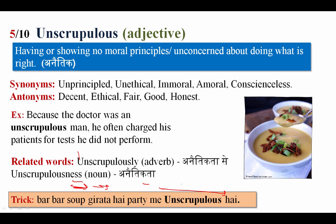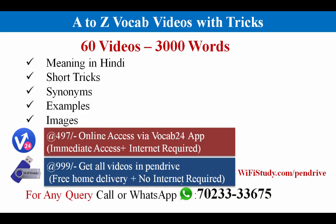Related word forms: unscrupulously — meaning unethically; unscrupulousness — meaning the quality of being unethical. Memory trick: bar bar soup girata hai party mein — a person who repeatedly spills soup at a party, spoiling others' clothes, is an unscrupulous person. So 'soup' helps you relate to unscrupulous, meaning unethical, jiske koi principles nahi hain.